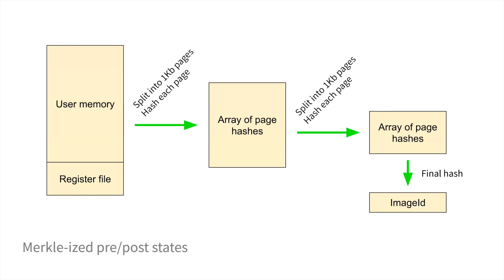Maybe we'll add vectorized instructions in the future, but it's pretty complex — it would cause the constraints to go up quite a bit for the proving system. We picked RISC-V because it's pretty challenging to get all the constraints to run feasibly. If we pick a more complex instruction set, the constraints go up quite a bit.